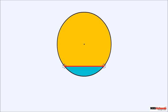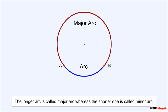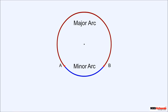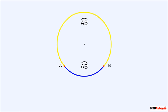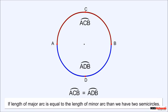Now consider the two points where the chord touches the circle. From one point to the other, we can go either clockwise or anti-clockwise, giving us two parts of the circle. Each of these is called an arc. The longer arc is called the major arc and the shorter one is called the minor arc. We write a curve over the name to represent an arc, like arc AB. To distinguish them, we mark point C on the major arc and point D on the minor arc — so arc ACB is the major arc and arc ADB is the minor arc. If the major arc equals the minor arc in length, we have two semicircles.